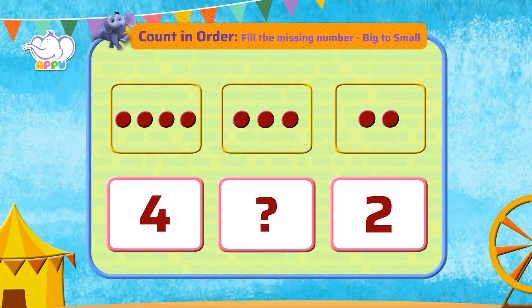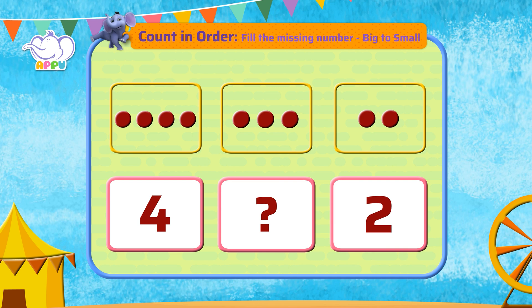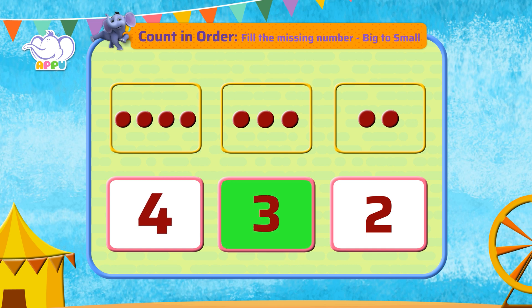We have the number four, a missing number, and then number two. What is the missing number? Let's count the number of dots and then write the number: one, two, three. We have three dots, so the missing number is three. Four, three, two.